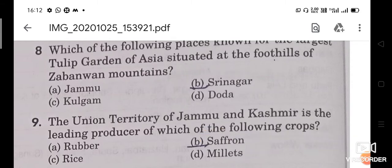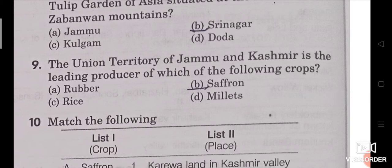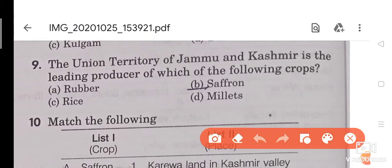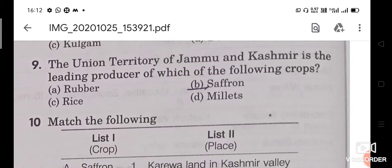Question 9: The union territory of Jammu and Kashmir is the leading producer of which of the following crops? The right answer is Saffron. Jammu and Kashmir union territory is the leading producer of saffron. Option B — saffron — is the right answer.